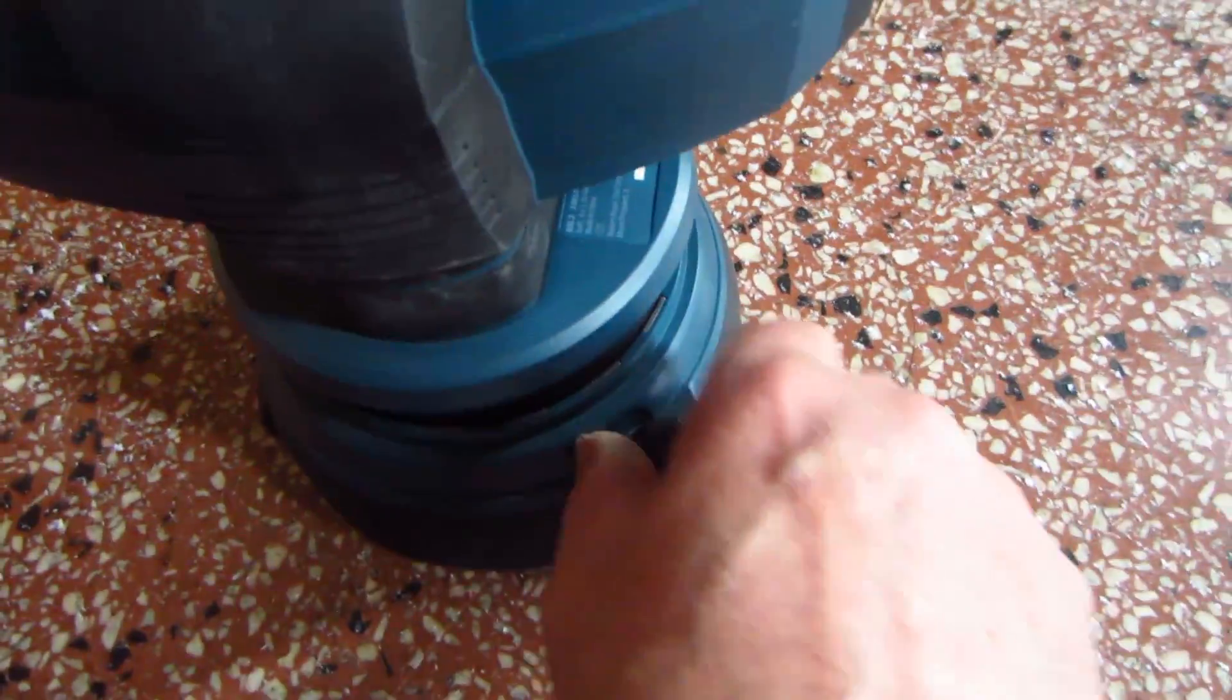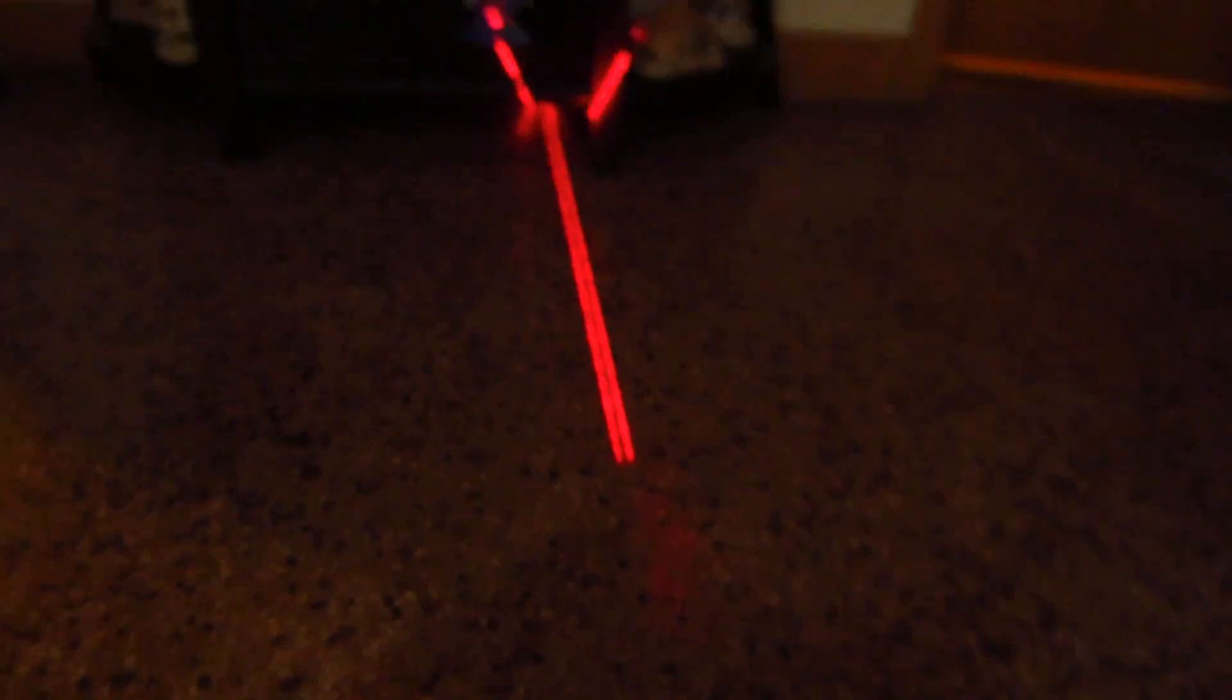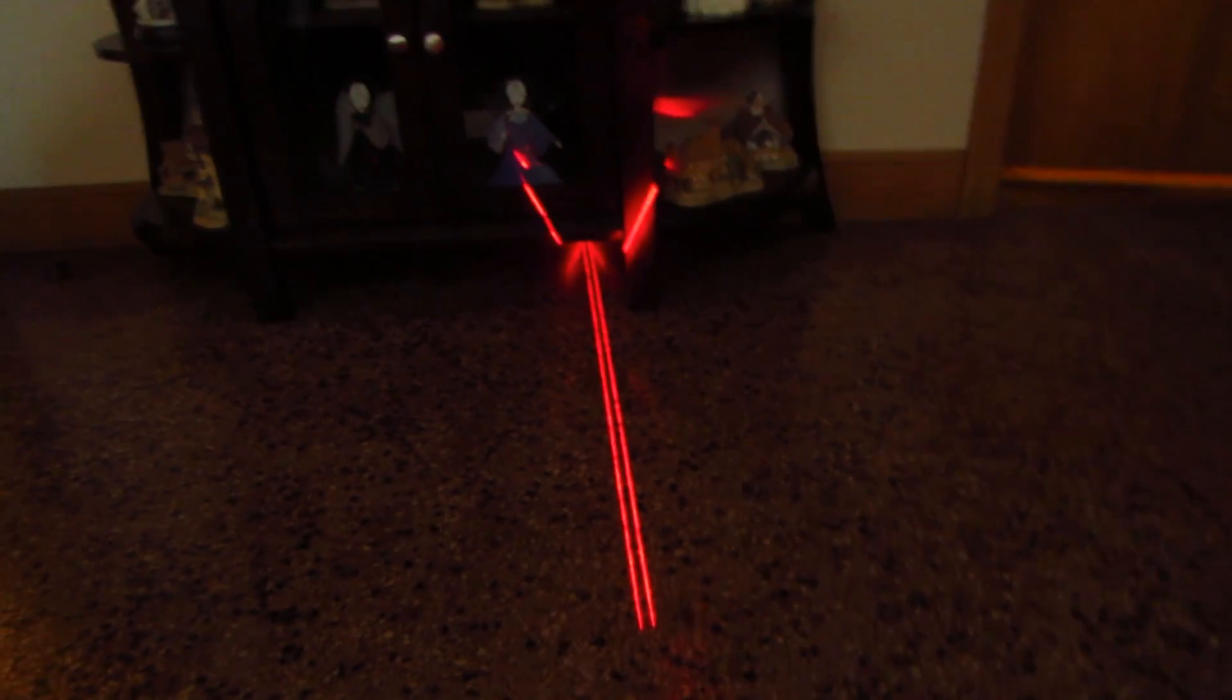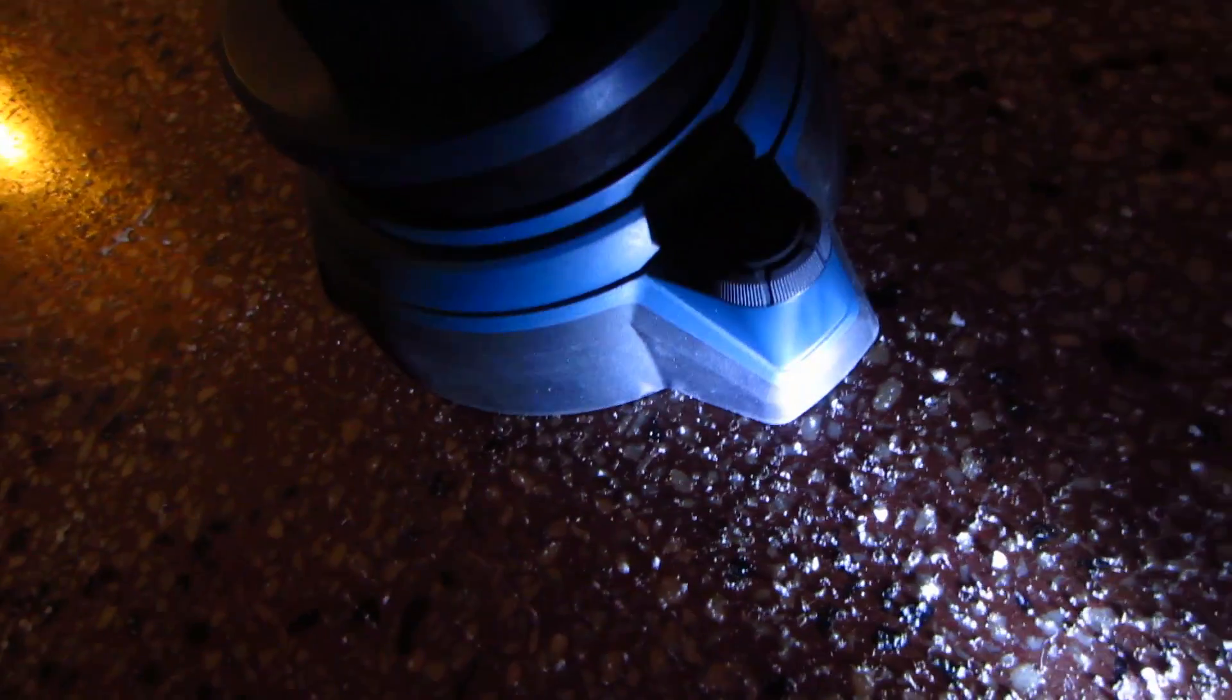As you can see, with this knob here, turn it until the two beams coincide as one. And where you bring them together, that's going to be the reference point where the rest of the floor is going to be measured against. So I'm going to turn this knob here until those two lines come together.